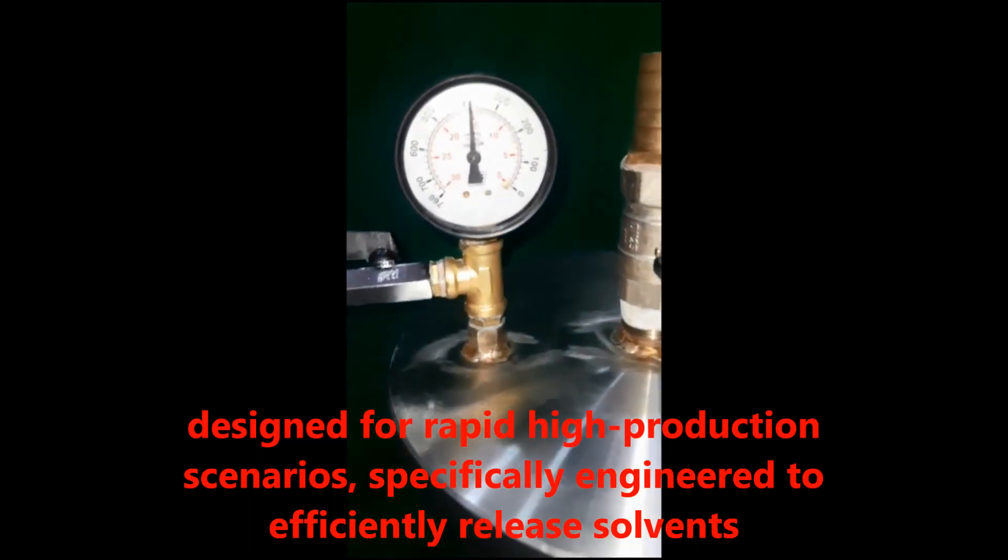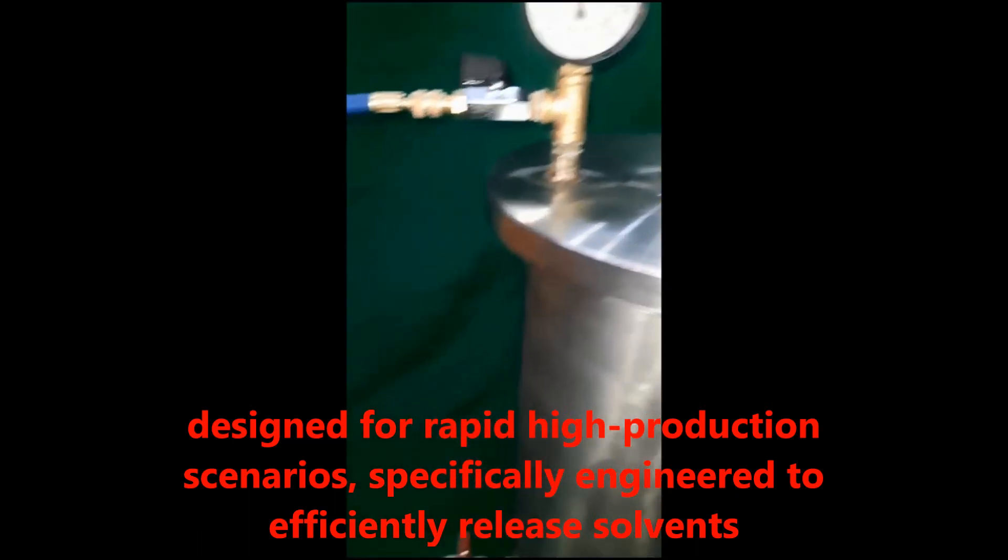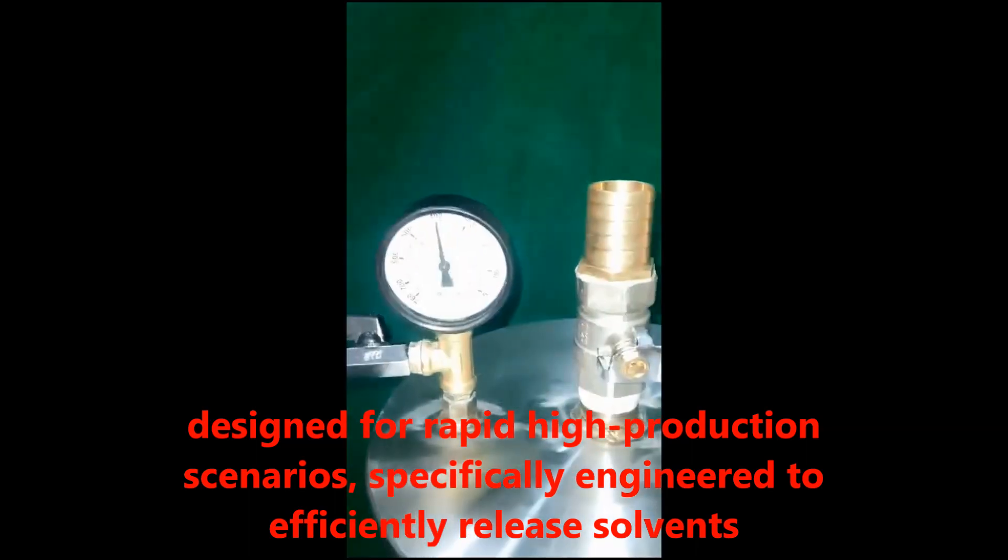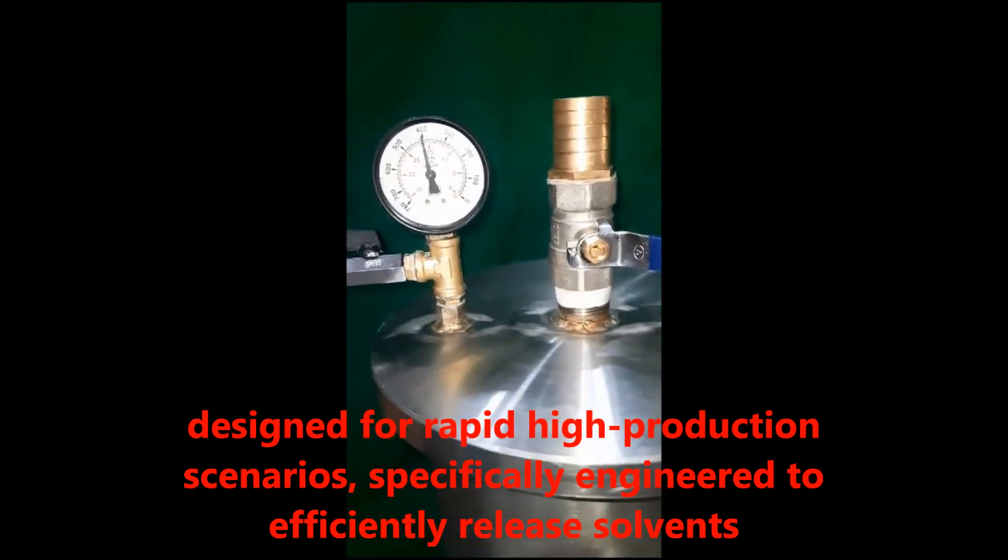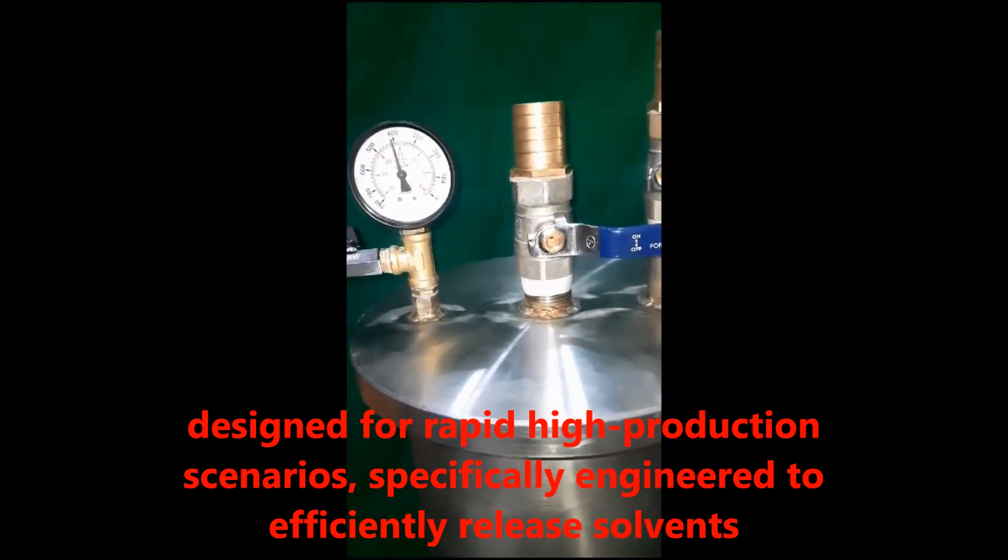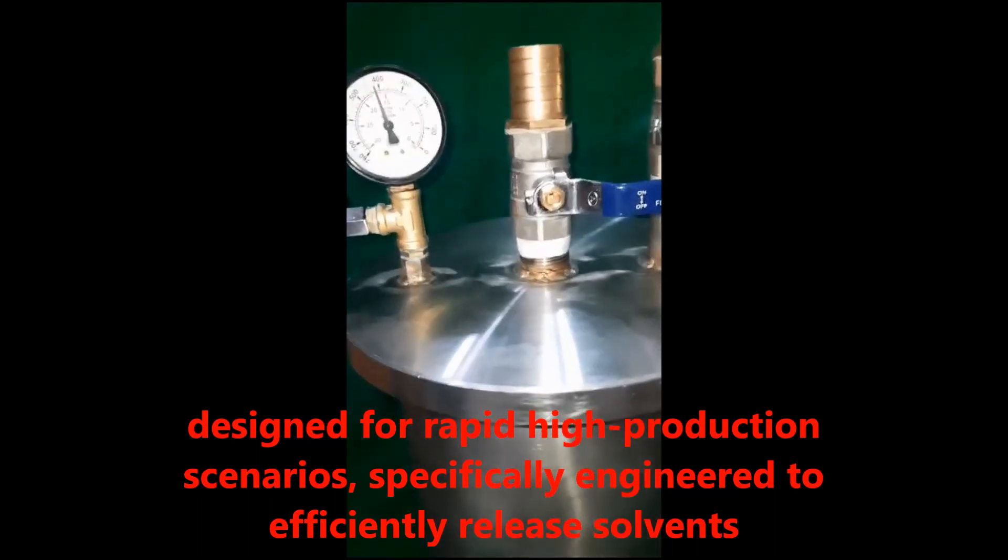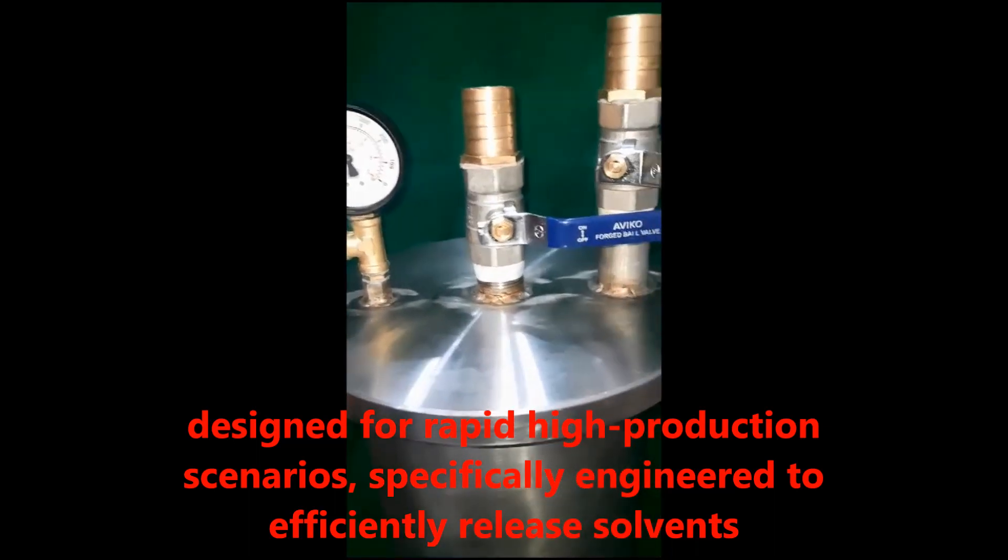This intricate arrangement ensures smooth flow and creates an expansive surface area, optimizing the capture of gases. The extended stainless steel tube in conjunction with the mesh network achieves remarkable coolness, providing an ample surface for preventing gases from entering the vacuum pump.